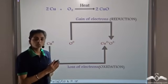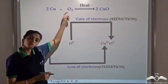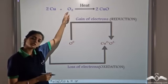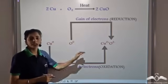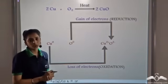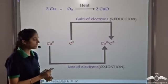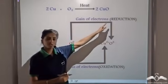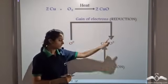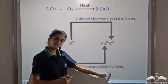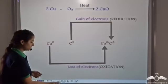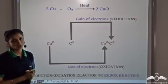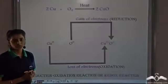So we now know how the removal and addition of oxygen is related to the electrons being involved. In this case again, we see that reduction and oxidation reactions are taking place simultaneously, so this is a redox reaction.